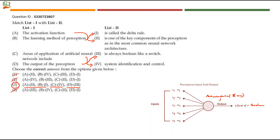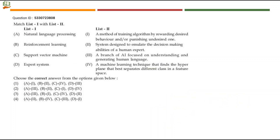Next question: match list 1 with list 2. List 1 has topics from artificial intelligence; list 2 has descriptions. From list 2, the first statement says: 'a method of training algorithm by rewarding desired behavior and/or punishing undesired one.' When a desired behavior is exhibited we give a reward; when undesired we punish. This gives feedback to the training process. This is reinforcement learning — only in reinforcement learning you have rewards for acceptable behaviors and punishment for unacceptable ones. So B maps to 1, and B1 is available in only one option.